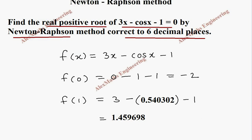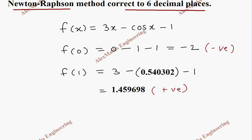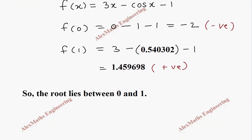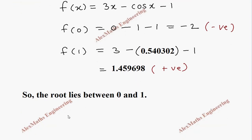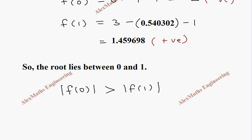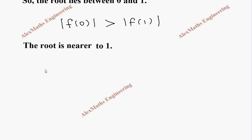f(1) = 1.459698. The value changes from negative to positive, so the root lies between 0 and 1. When we find the modulus of f(0), that is greater than modulus of f(1), which means the root is nearer to 1.